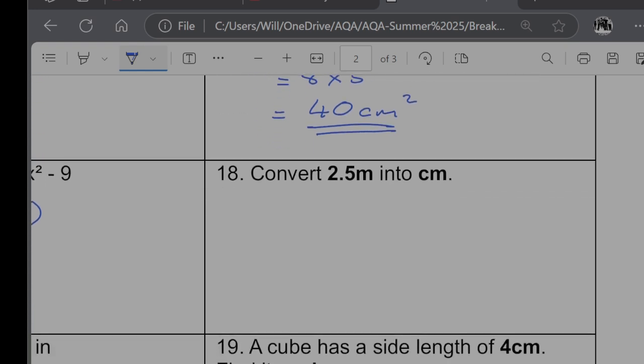Question 18. Convert 2.5 meters into centimeters. Well, one meter is the same as 100 centimeters. So 2.5 meters is going to be equal to 250 centimeters.